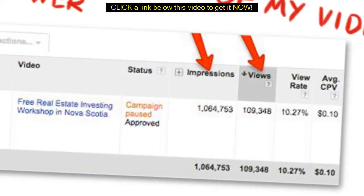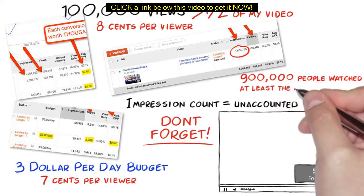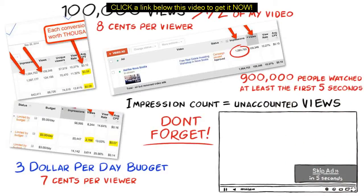As you can see from this screenshot, it has over 100,000 views that were paid views. But take a look at this. We have over 1 million impressions and over 100,000 views, which means 900,000 plus views of people who watched at least 5 seconds or a little less than half of the video. I paid absolutely nothing for these 900,000 views, which are unaccounted views.